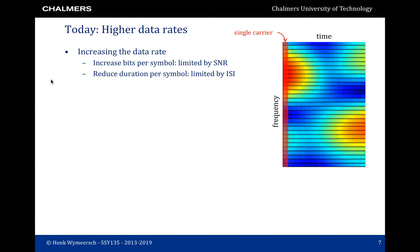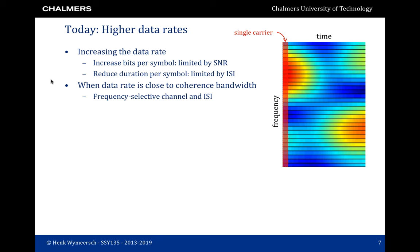If we further want to increase the throughput, we have a number of options. First, we can increase the number of bits per symbol. This is however limited by the SNR, because when we go to a higher order constellation, we need more SNR to maintain a certain bit error rate. Alternatively, we could reduce the duration per symbol, which is the same as increasing the bandwidth. This however is limited by inter-symbol interference.